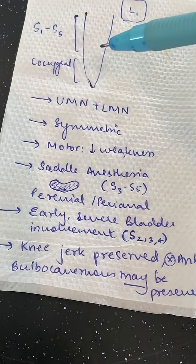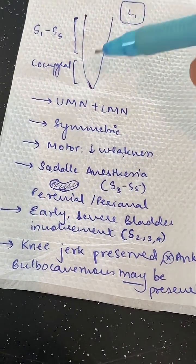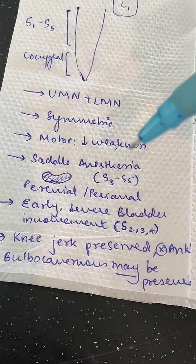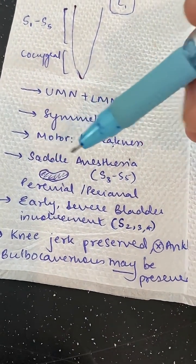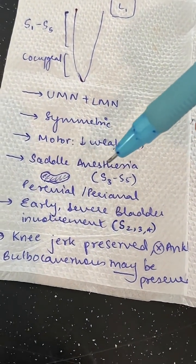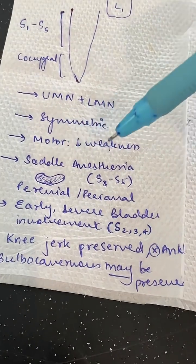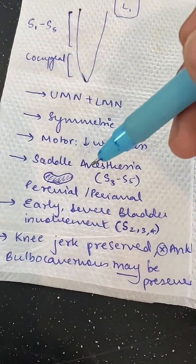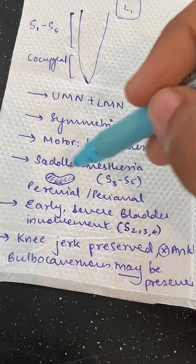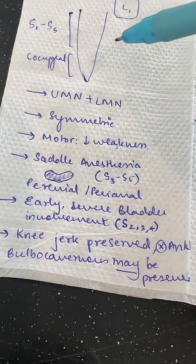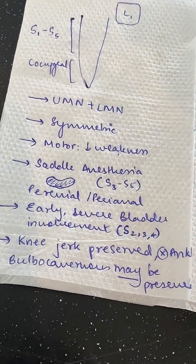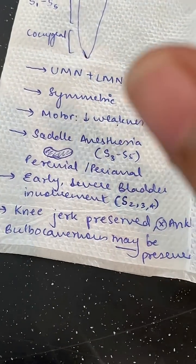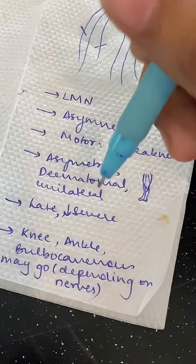Coming to sensory deficits, conus only innervates the sacro-coccygeal region, which is the perianal or perineal region, so it's called saddle anesthesia. Saddle means when you sit on a horse, that entire saddle area in contact with it — that is called saddle anesthesia.